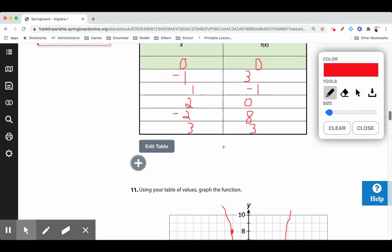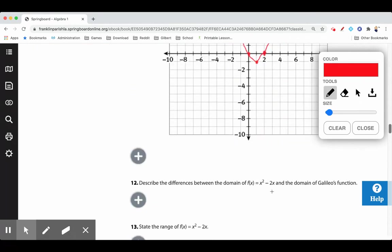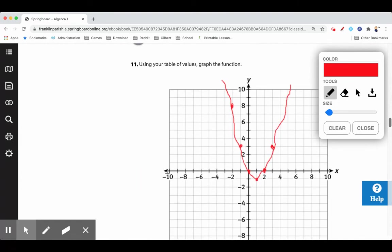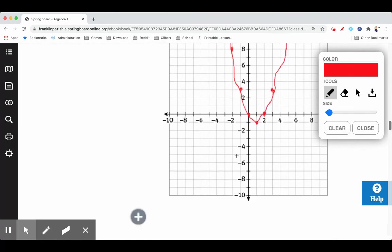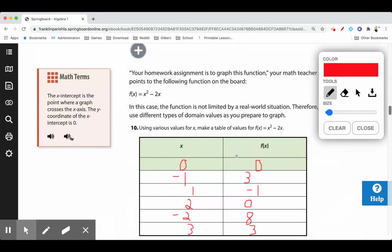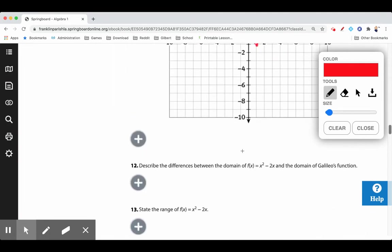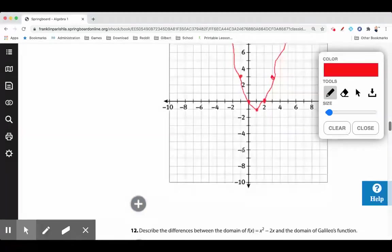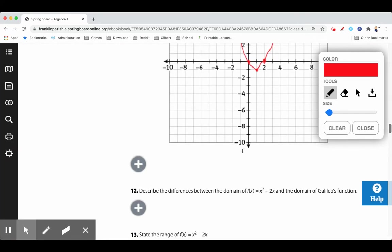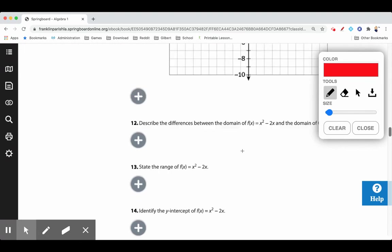What's the difference between this domain and the domain of Galileo's function? Well, this domain is all real numbers because it's going to be negative infinity this way, positive infinity that way—all real numbers. The Galileo function only went from 0 to 10. So the difference is this one doesn't have any restrictions on the domain. Galileo's problem did have a restriction on the domain: it started at 0 and it ended at 10.